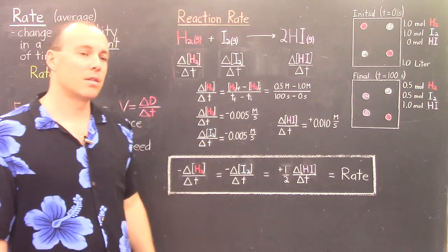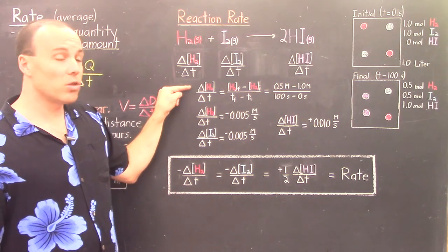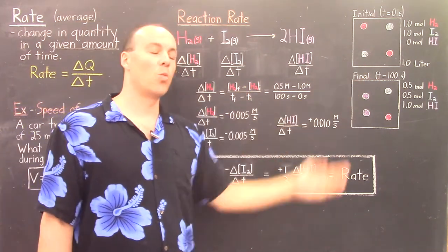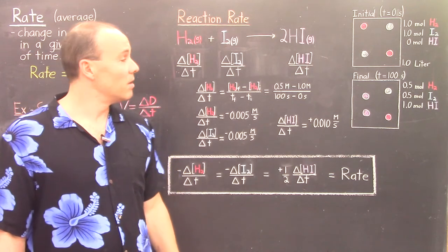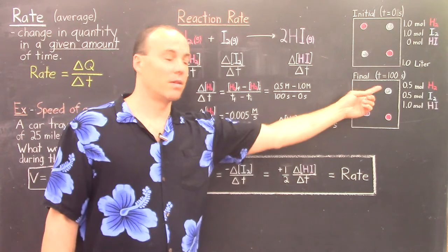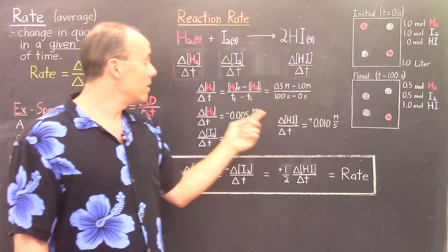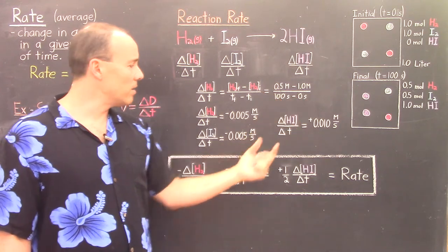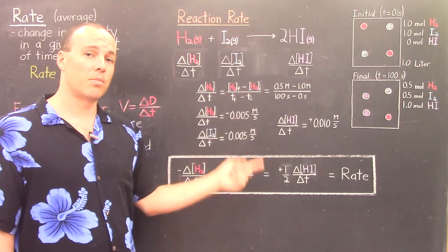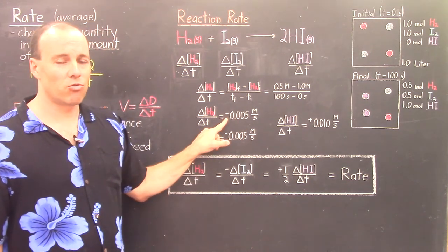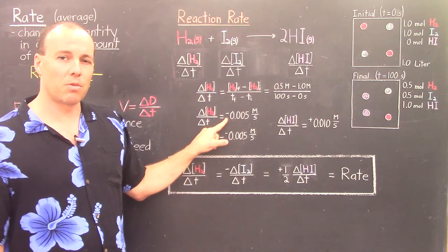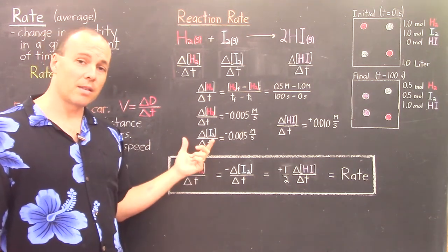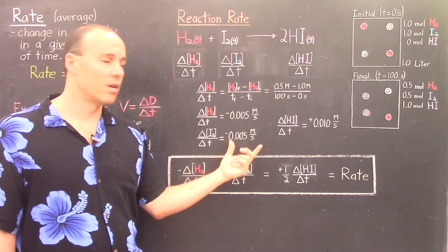Calculating these three rates — for hydrogen, the change in concentration would be final minus initial: 0.5 minus 1, over the change in time, 100 minus 0. This gives negative 0.005 molarity per second. It's negative because hydrogen is disappearing, and it's disappearing at a rate of 0.005 M/s. Calculating the rate with respect to iodine comes out to be the same: negative 0.005 M/s. This is expected because they have the same coefficients — every time one reacts, the other also reacts.